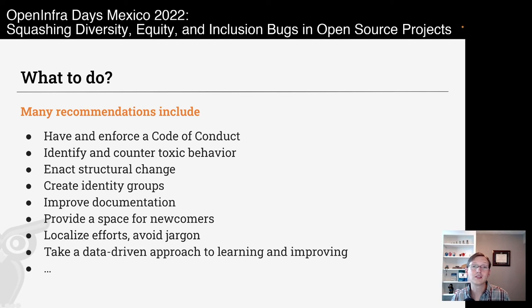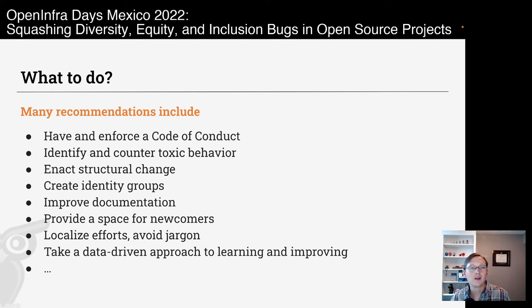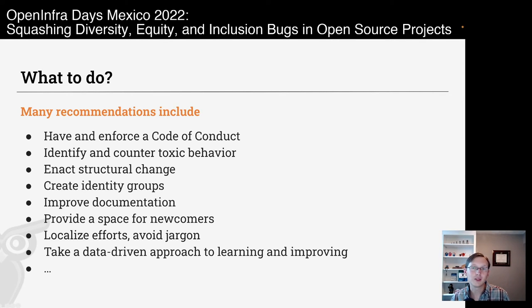We can also localize efforts. One approach is to avoid jargon, which keeps out people who are not familiar with it and makes it easier to translate the software, documentation, and website. It may also be good to have local user groups — local teams across the world specific to that region. Finally, take a data-driven approach: only if we know how we're doing today and identify where the bottlenecks are can we see if changes we make actually lead to improvements.